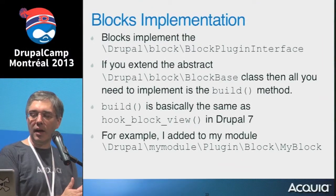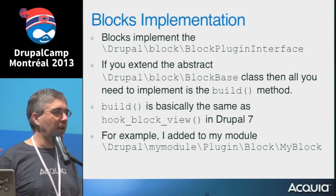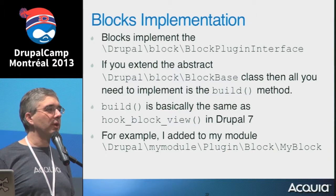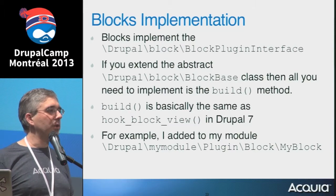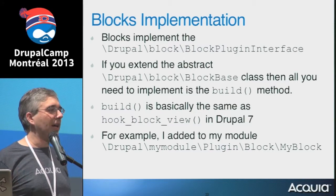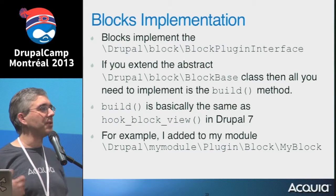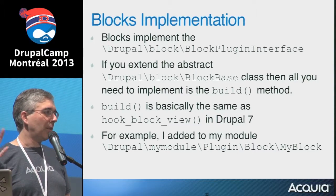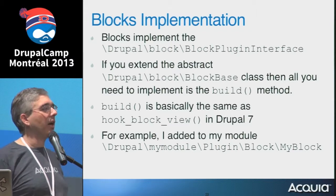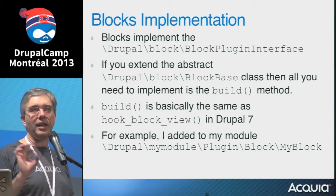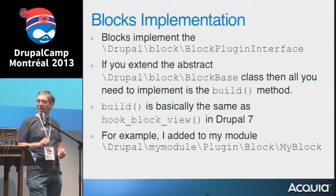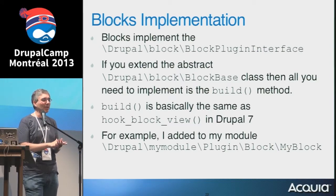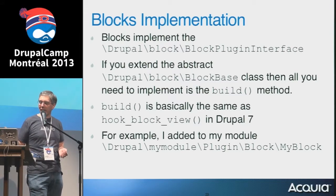To implement a block, you implement the block plugin interface. Every plugin has to have an interface. Drupal core provides a lot of base classes, and we're going to use block base. If you use block base, basically every method you need in the interface is already implemented. If you want a default block that behaves like a generic block, you have to do very little work — just extend this BlockBase class. The one thing you'll want to implement is the build() method, which is basically the same as hook_block_view in Drupal 7. I add it to my module under Drupal\MyModule\Plugin\Block\MyBlock.